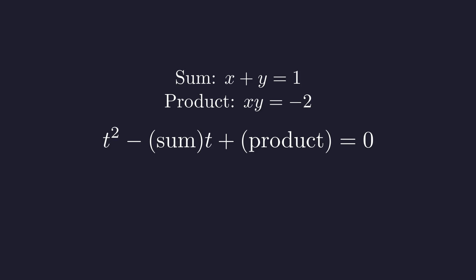Remember, if we have a quadratic with roots x and y, it takes the form t squared minus the sum of the roots times t plus the product of the roots, all equal to 0. Plugging in our values, we get t squared minus 1 times t plus negative 2 equals 0, which simplifies to t squared minus t minus 2 equals 0.